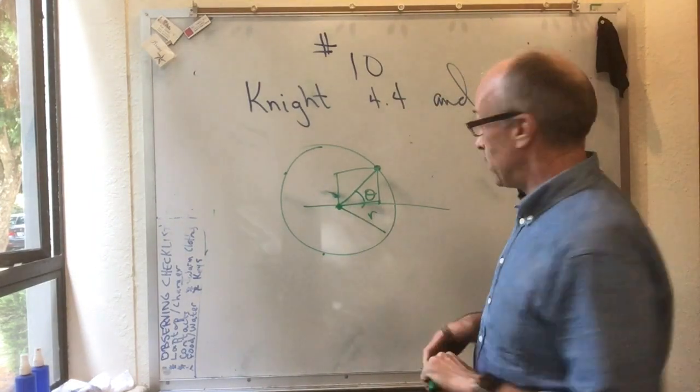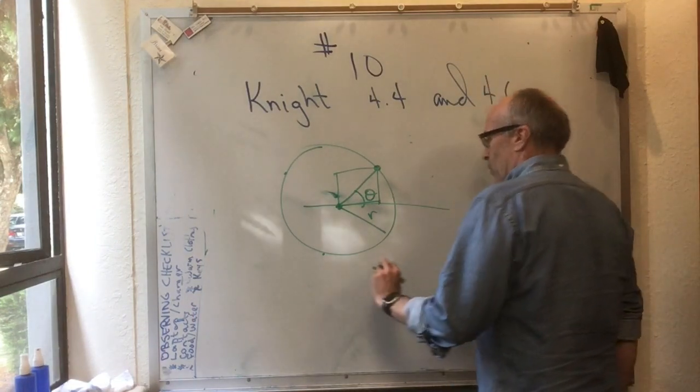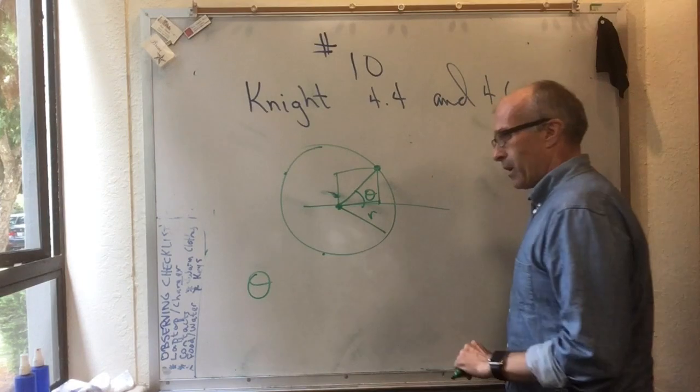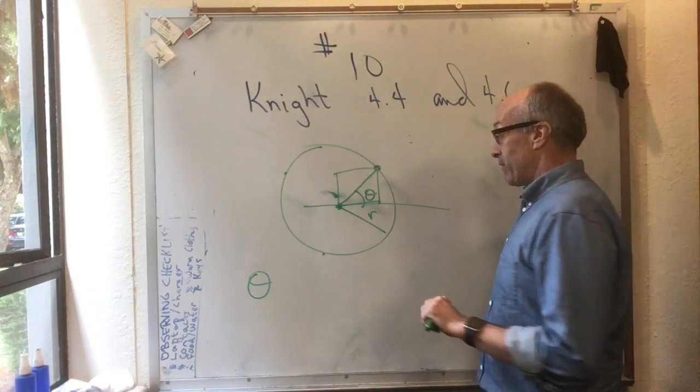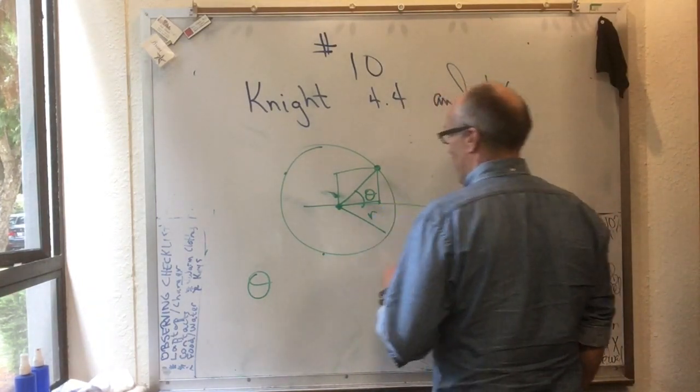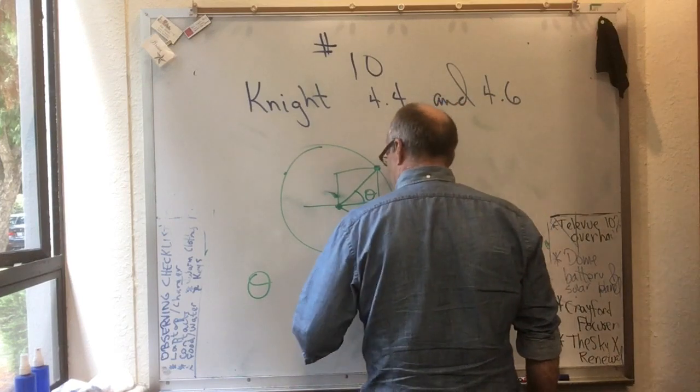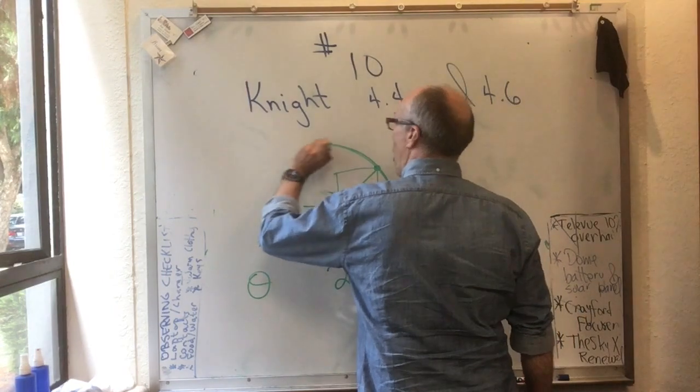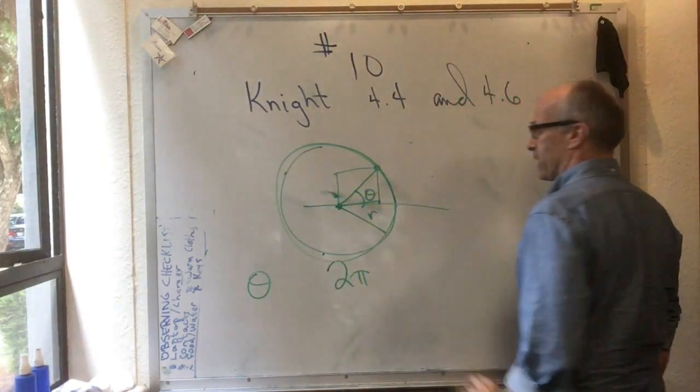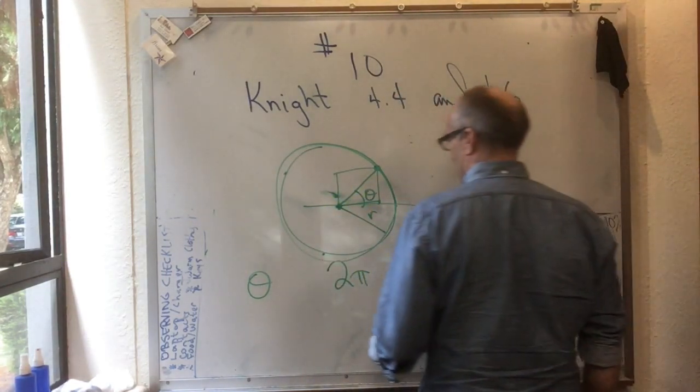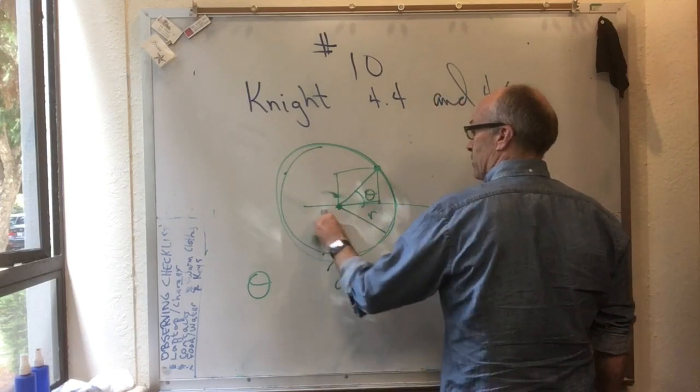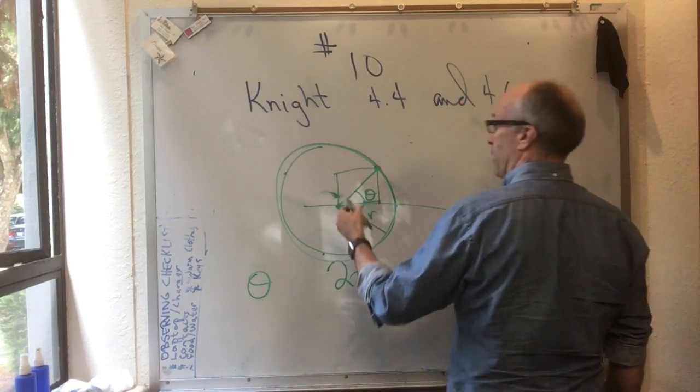The next thing we do is we decide that we're going to measure theta in radians. And that turns out to be extremely convenient. If we measure theta in radians, and there are 2π radians in a circle, then if the particle goes all the way around once, the angle theta has gone from zero to 2π.